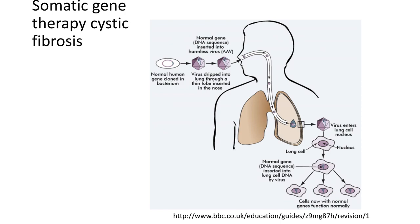The first one is somatic, and in this one what we need to know is that it affects body cells — every cell it could impact on except for gametes. In this particular example we're looking at how we can use somatic gene therapy to help cure cystic fibrosis.